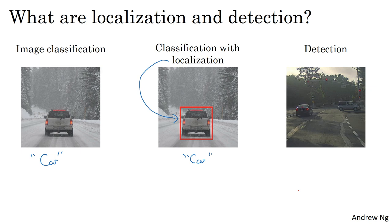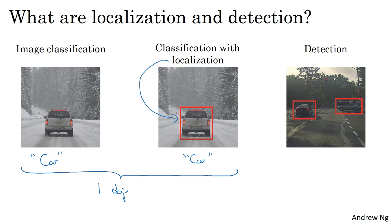Later this week, you then learn about the detection problem, where there might be multiple objects in the picture, and you have to detect them all and localize them all. For an autonomous driving application, you might need to detect not just other cars, but maybe pedestrians, motorcycles, and other objects. In the terminology we use this week, classification and classification with localization usually have one big object in the middle of the image. In contrast, in the detection problem, there can be multiple objects — even multiple objects of different categories — within a single image.